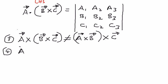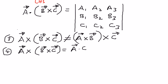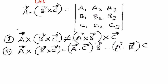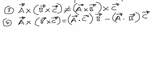The fourth property is: if we have vector A and cross it by vector B cross vector C, that is the same as saying vector A dot vector C times vector B, minus vector A dot vector B times vector C. These are all the different properties, and we will look at examples of each one as we advance in this playlist.